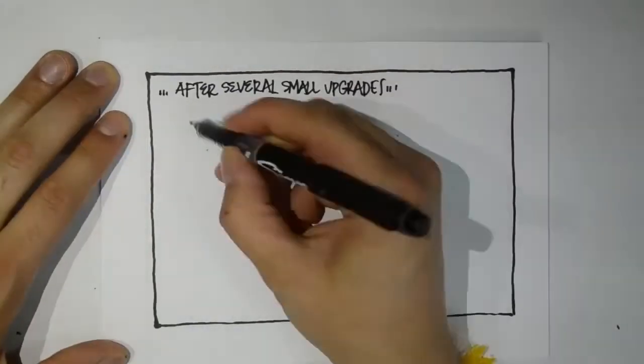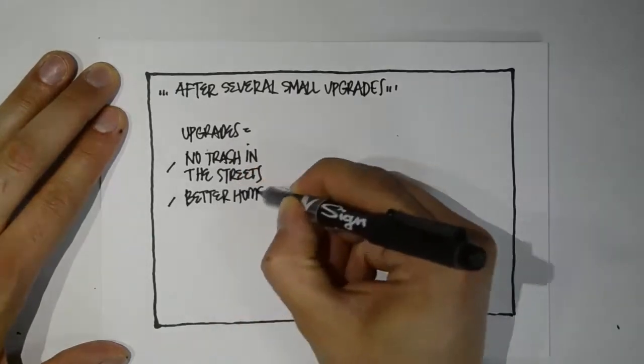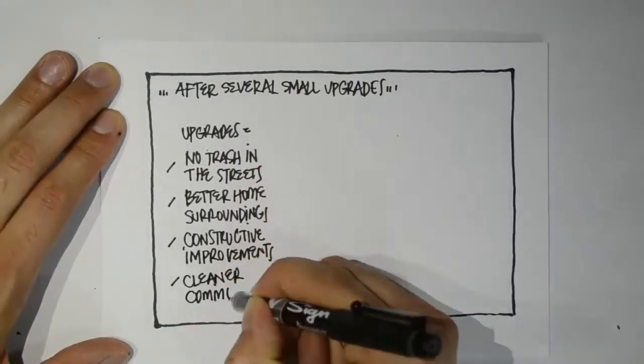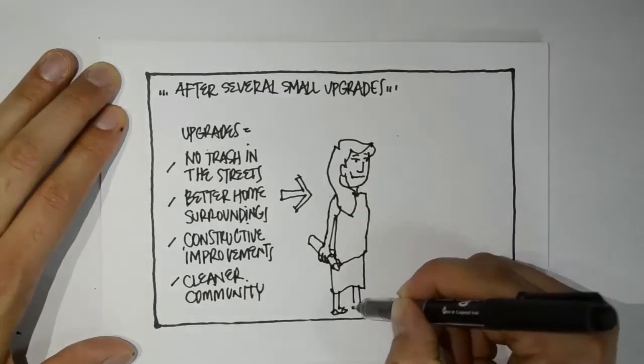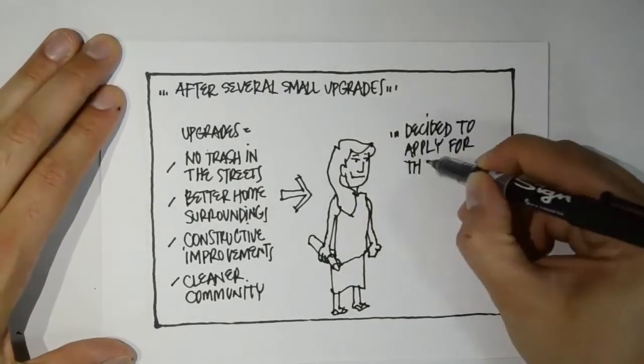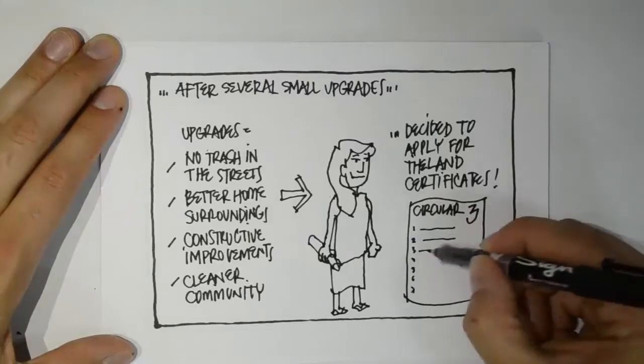After making small upgrades and making their homes in the community cleaner and more attractive, the community leader suggested applying for a land certificate and hoped to achieve implementation of circular three, thinking they had completed the seven steps.